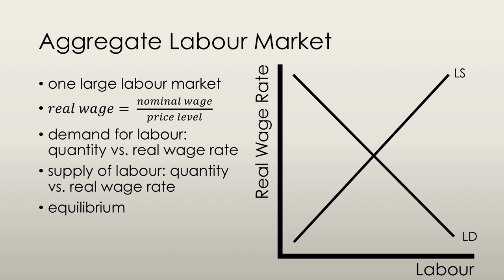The supply of labor is the relationship between the quantity of labor supplied and the real wage rate. The quantity of labor supplied is the number of hours that all households in the economy plan to work during a given time period. The real wage rate influences the quantity of labor supplied because it determines what they can buy with their money. So they're going to work more if they can earn a greater real wage rate and buy more stuff. The quantity of labor supplied increases as the real wage rate increases for this reason.